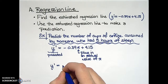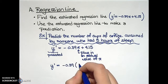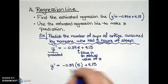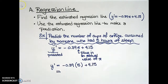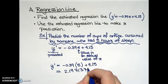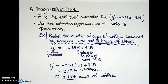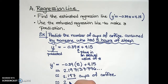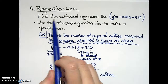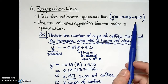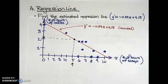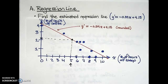So doing our prediction: y-prime equals negative 0.39 (rounded) times 5 hours of sleep, plus 4.15 (also rounded). Plugging this into our calculator, we obtain approximately 2.197 cups of coffee. Since nobody actually counts 0.197 cups of coffee, we can say that a person who got five hours of sleep would have consumed approximately two cups of coffee. This prediction matched fairly well with our sketch by hand.